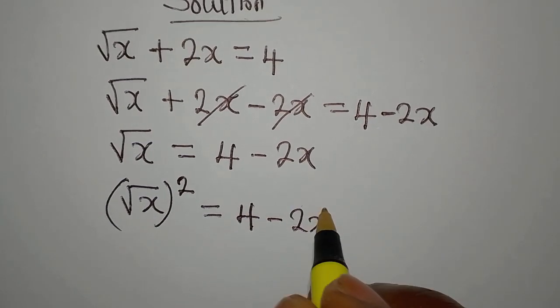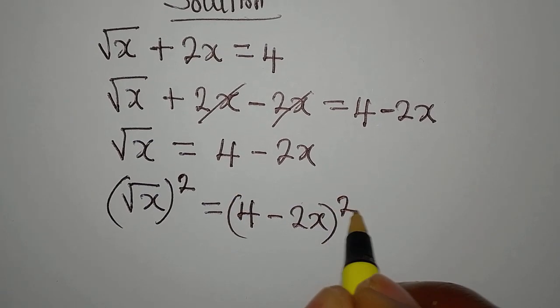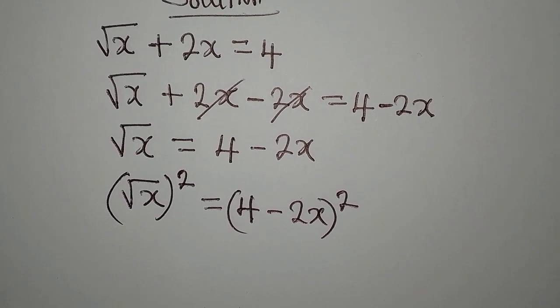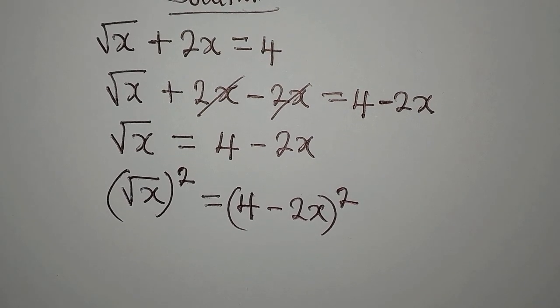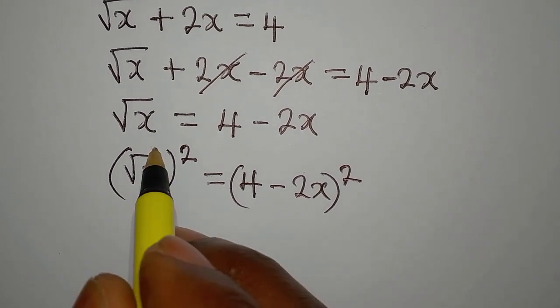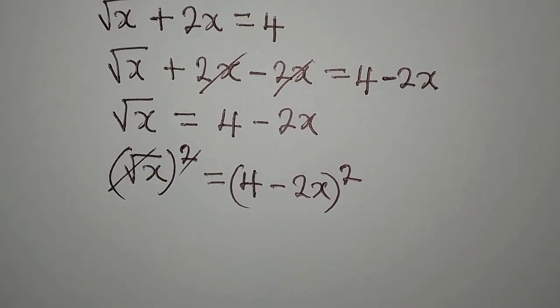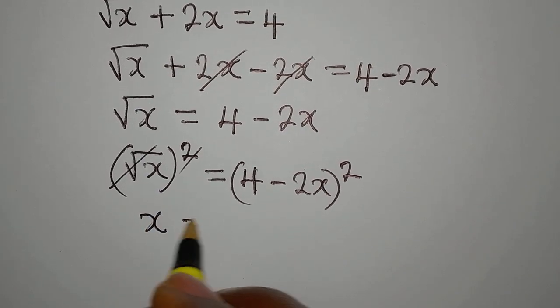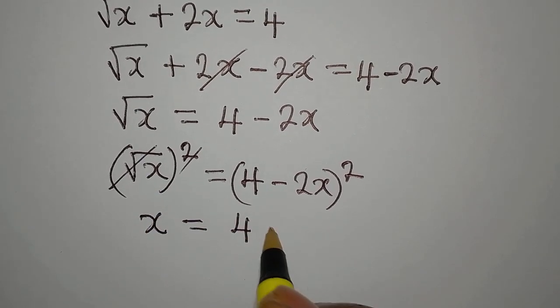We square both sides. Then we have 4 minus 2x, the whole of this will be squared. Since what you do on one side you have to do on the other side, the square roots are gone and we have x equal to 4 minus 2x multiplying 4 minus 2x.